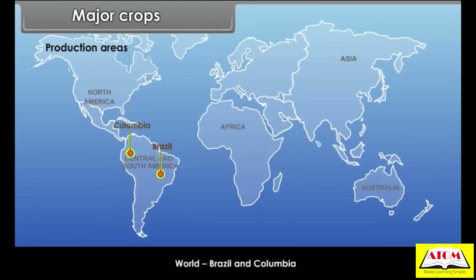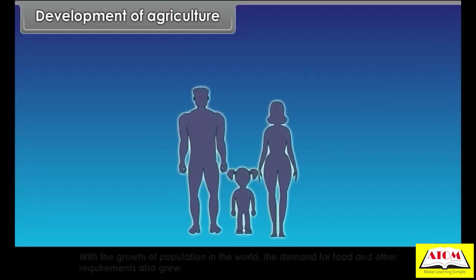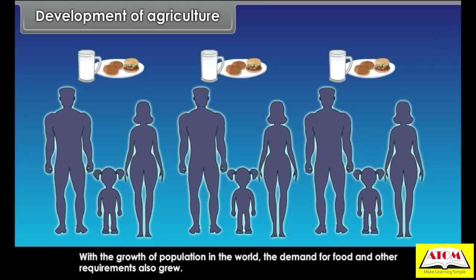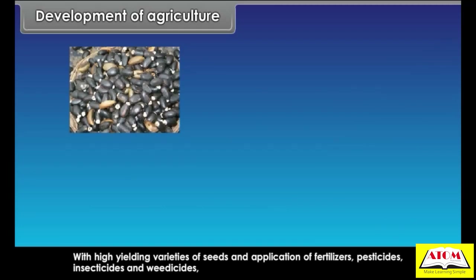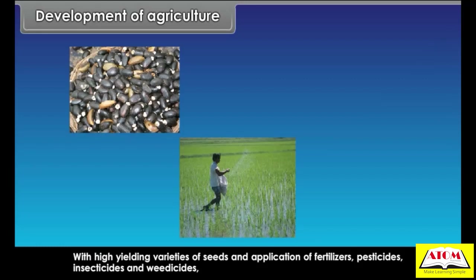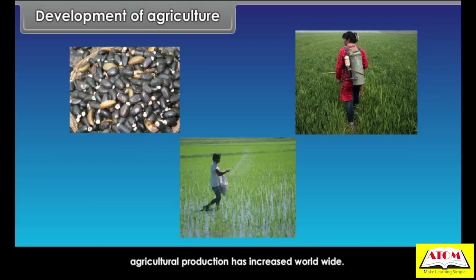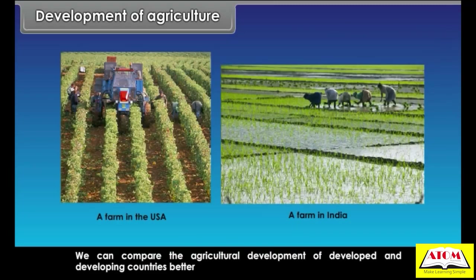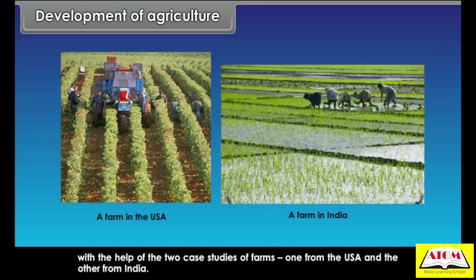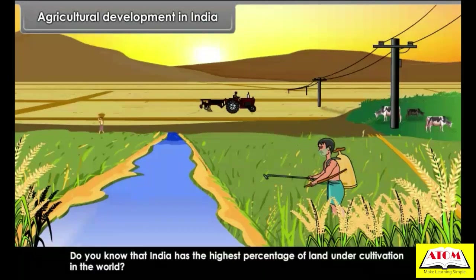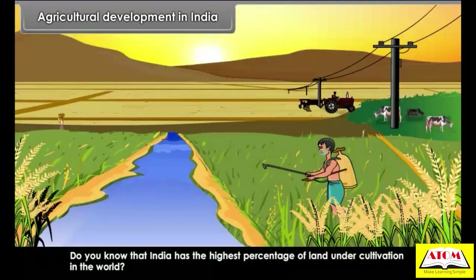Development of agriculture: with the growth of population in the world, the demand for food and other requirements also grew. With high-yielding varieties of seeds and application of fertilizers, pesticides, insecticides and weedicides, agricultural production has increased worldwide. We can compare the agricultural development of developed and developing countries with the help of two case studies — one from the USA and the other from India. India has the highest percentage of land under cultivation in the world.